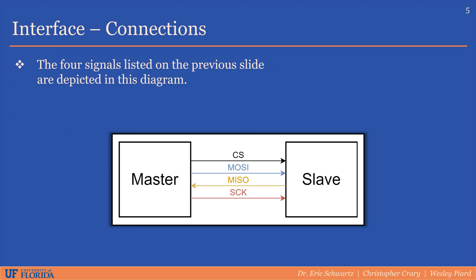Each of those signals is shown in the diagram, with arrows indicating the direction of data flow. Note that the MISO signal is the only one that is an input to the master device. This configuration is commonly known as four-wire mode. In some applications with only one slave device, the chip select may be omitted and permanently enabled. Other three-wire configurations are possible — for example, omitting MISO when the master only needs to send commands, or omitting MOSI when the master only needs to read from the slave device.